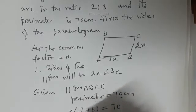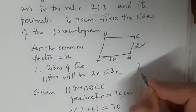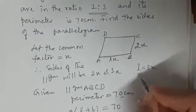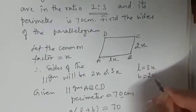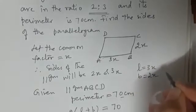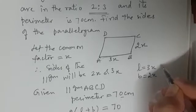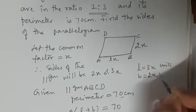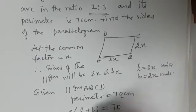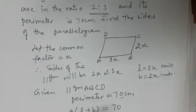What is length? Length we have taken as 3x, so l is 3x in units. What is breadth? Breadth is 2x in units. This implies 2(3x + 2x) equals 70.